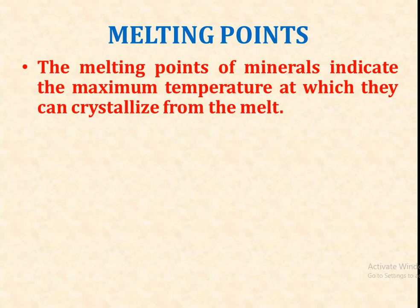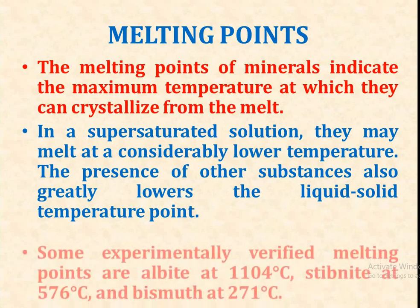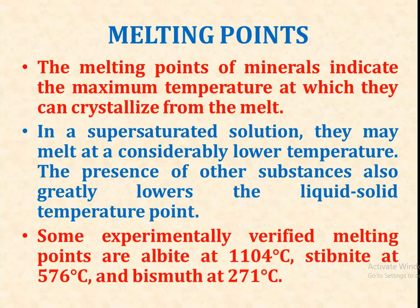The melting point of minerals indicates the maximum temperature at which they can crystallize from melt. In a supersaturated solution, they may melt at considerably lower temperature. The presence of other substances also greatly lowers the liquid-solid temperature point. Some experimentally verified melting points are: albite at 1104 degrees Celsius, stibnite at 576 degrees Celsius, and bismuth at 271 degrees Celsius.